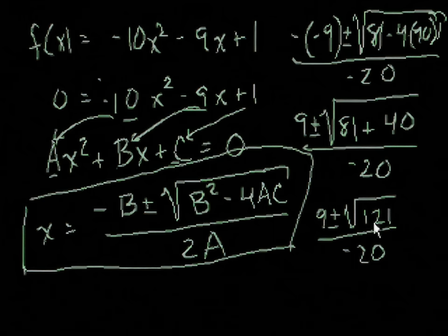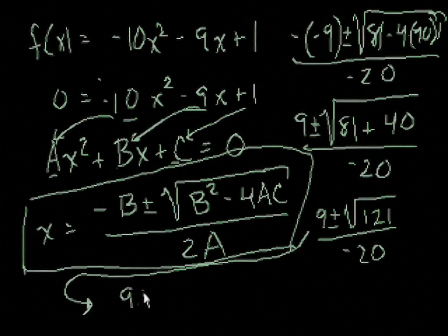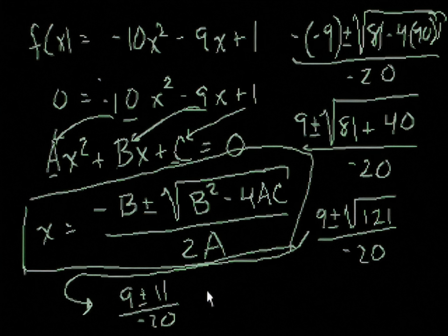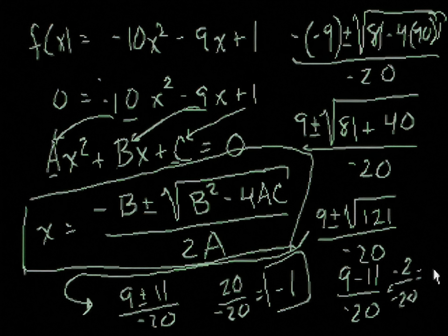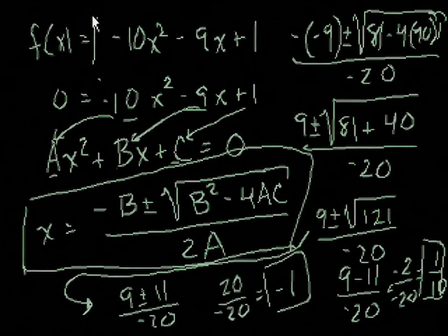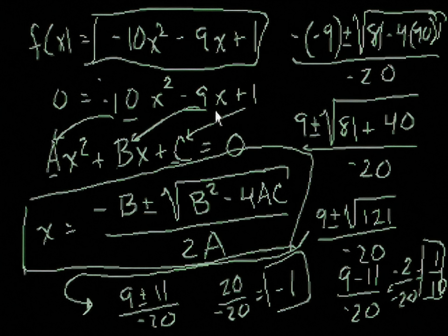81 plus 40 is 121, so we have 9 plus or minus the square root of 121 over negative 20. The square root of 121 is 11, giving us 9 plus or minus 11 over negative 20. For the plus case: 9 plus 11 is 20, so 20 over negative 20 equals negative 1. For the minus case: 9 minus 11 is negative 2, so negative 2 over negative 20 equals 1 tenth. The function intersects the x-axis at x equals negative 1 and x equals 1 tenth.